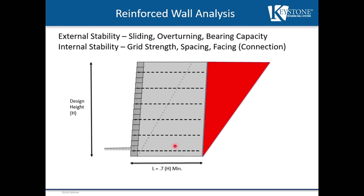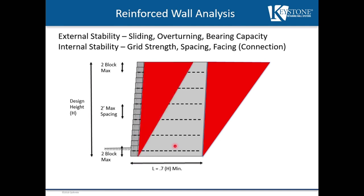Once we determine the mass of soil for external stability, we look at the internal stability of the wall. Depending on the reinforced soil type directly behind the retaining wall, we choose a grid that's strong enough to intercept the failure plane and long enough to go past it — keeping the soil from sliding forward and pulling the grids out — to stabilize the internal part of our retaining wall. Typically the first layer of geogrid is placed two blocks from the base and two blocks from the top of the wall, with a maximum spacing of two feet in between. This helps prevent connection issues with the block facing.